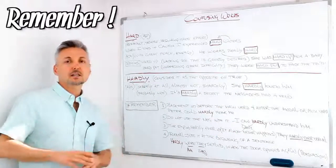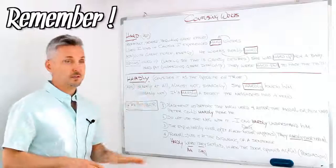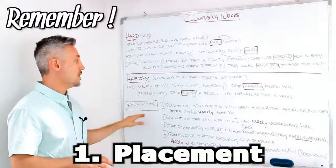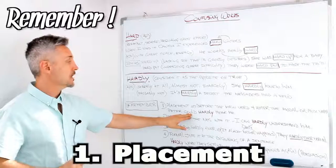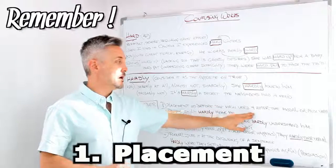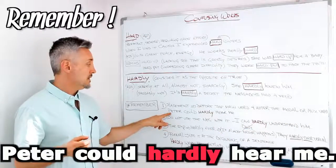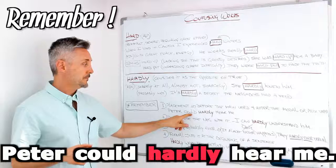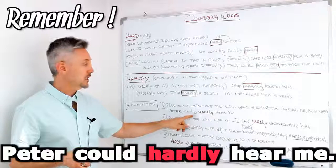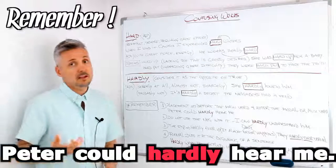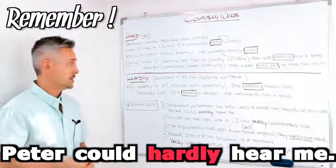Four things that you need to remember about these two words. First, placement. The placement of hardly in this case. Before the main verb and after the modal or auxiliary verb. For example, Peter could, modal verb could, hardly hear me. He didn't hear me at all.